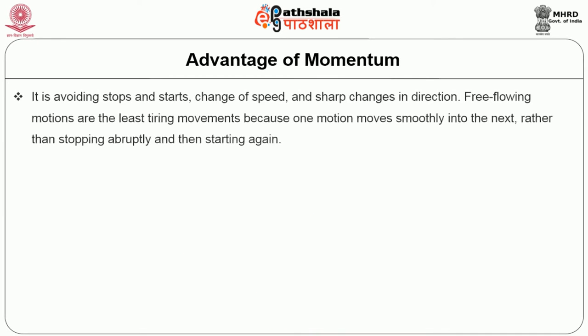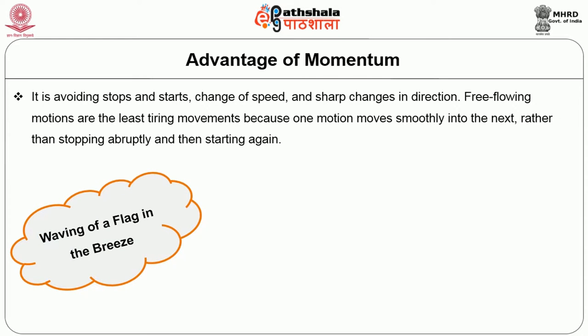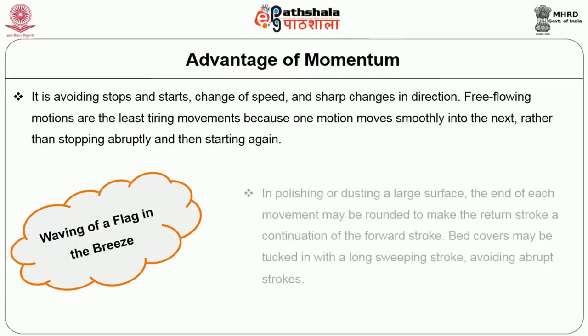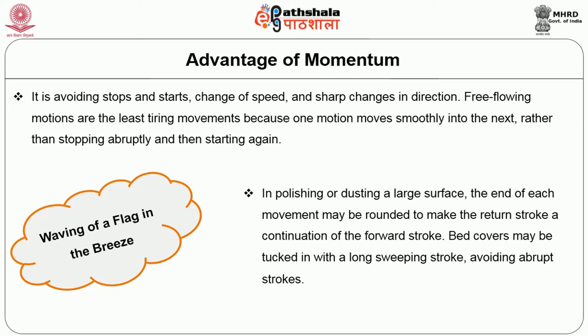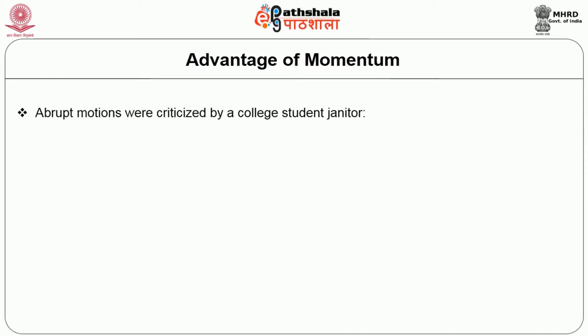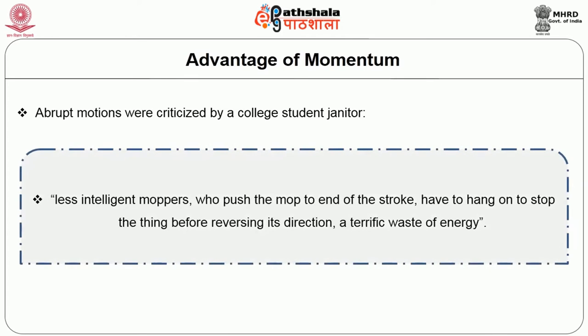Taking advantage of momentum involves avoiding stops and starts, changes of speed, and sharp changes in direction. Free-flowing motions are the least tiring because one motion moves smoothly into the next rather than stopping abruptly and restarting. The waving of a flag in a breeze is an example of free-flowing motion. In polishing or dusting a large surface, the end of each movement may be rounded to make the return stroke a continuation of the forward stroke. Abrupt motions waste energy — like a mopper who pushes the mop to the end of each stroke and stops before reversing direction.